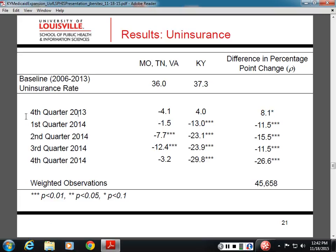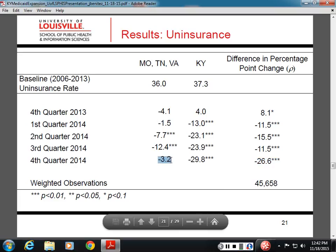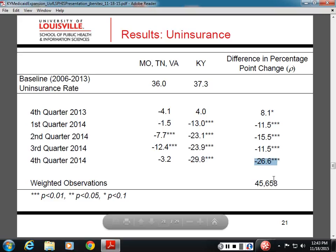We really start to see the action through 2014. By the end of Q1 2014, the actual reduction in Kentucky due to expansion was about an 11.5-percentage-point change. By Q2 it was 15.5%, Q3 was 11.5%, and the largest effect was in Q4. You can see the Kentucky trend as well as the actual effect of the policy. To get the causal estimator, we subtract negative 3.2 from negative 29, which gives us the difference-in-difference percentage change — our causal estimator of interest.